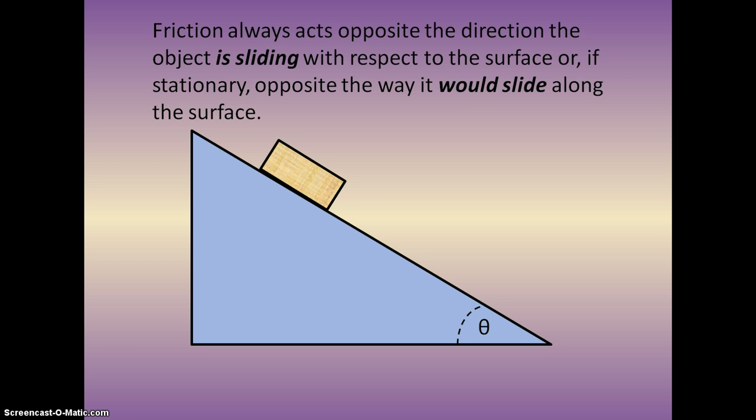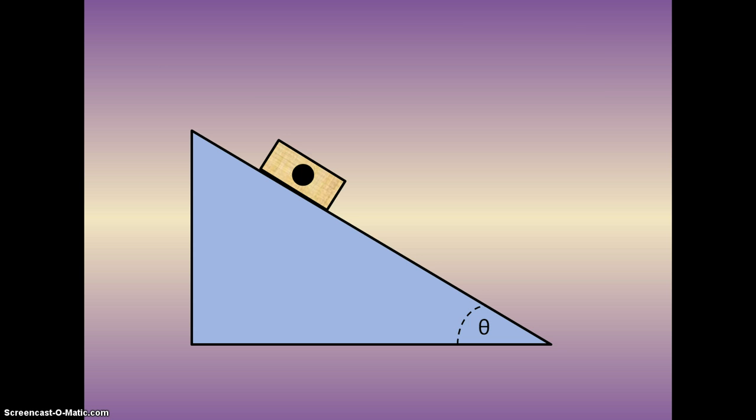As before, friction acts opposite direction an object is sliding or would slide relative to a surface. So I have a block on an incline here and we're going to start as always with an FBD where the normal force acts perpendicular to the surface and the force of gravity acts straight down. Now you may already be drawing FGX and FGY. If you're doing this that is totally fine. Now the block is going to slide down the incline or along the x-axis to the right. Therefore friction acts opposite the way it would slide and parallel to the x-axis. The y-axis as always is perpendicular to the surface and it's always a good idea to label which way is positive. Now again I'm always going to choose to the right on the x-axis is positive and up on the y-axis is positive.